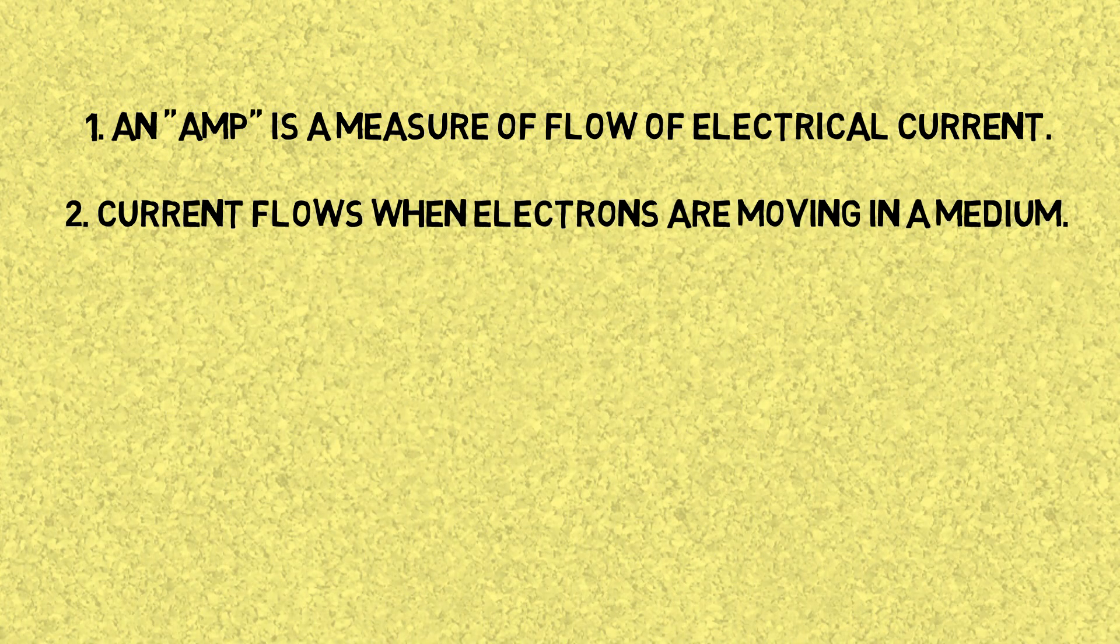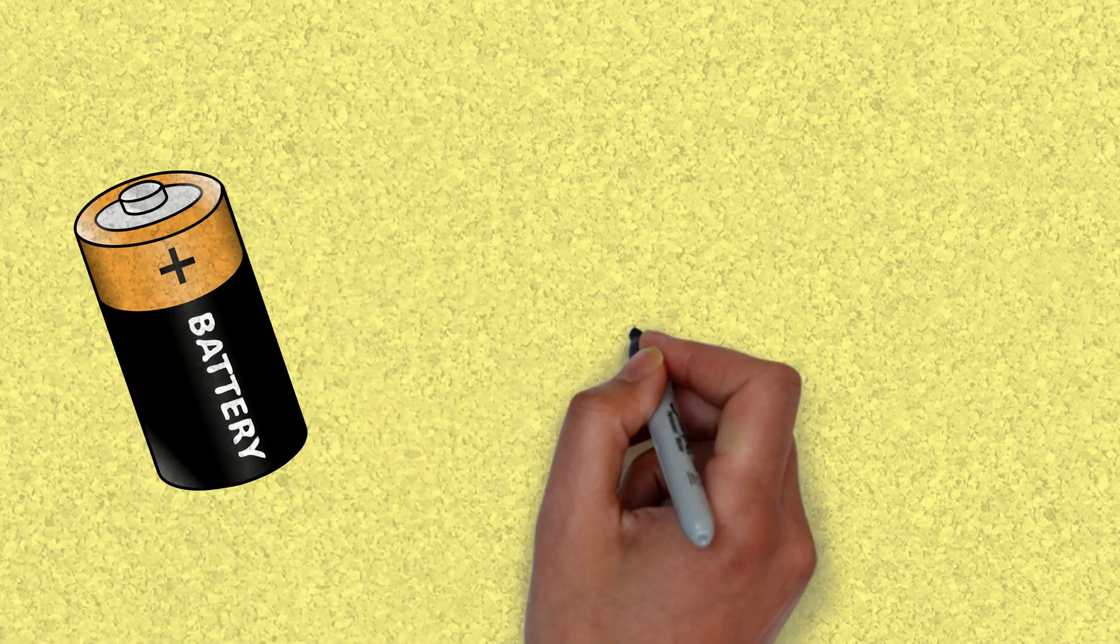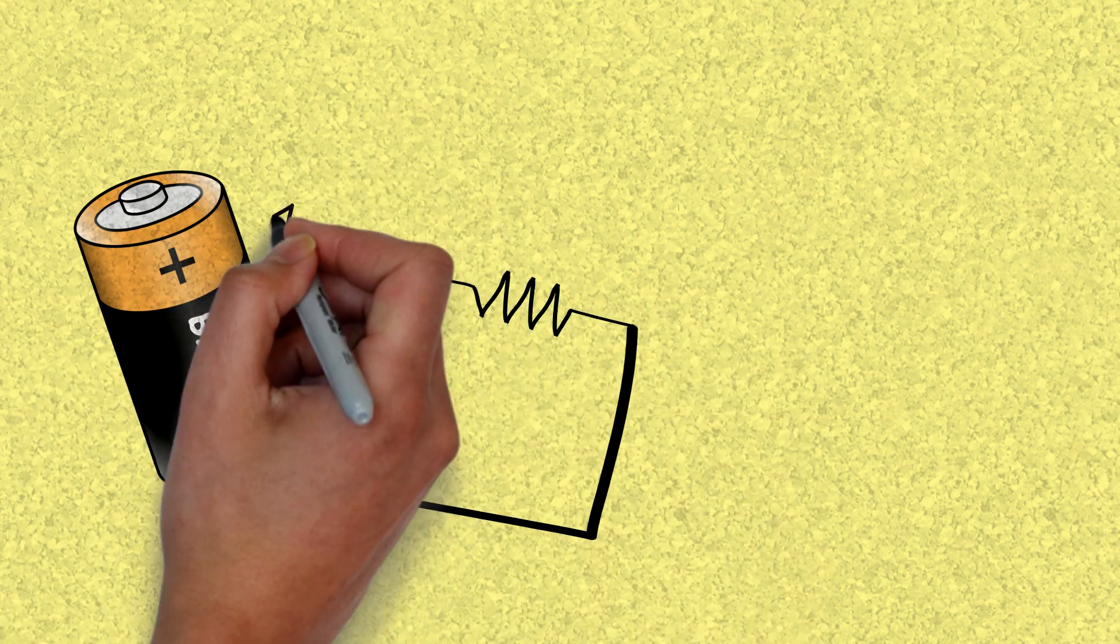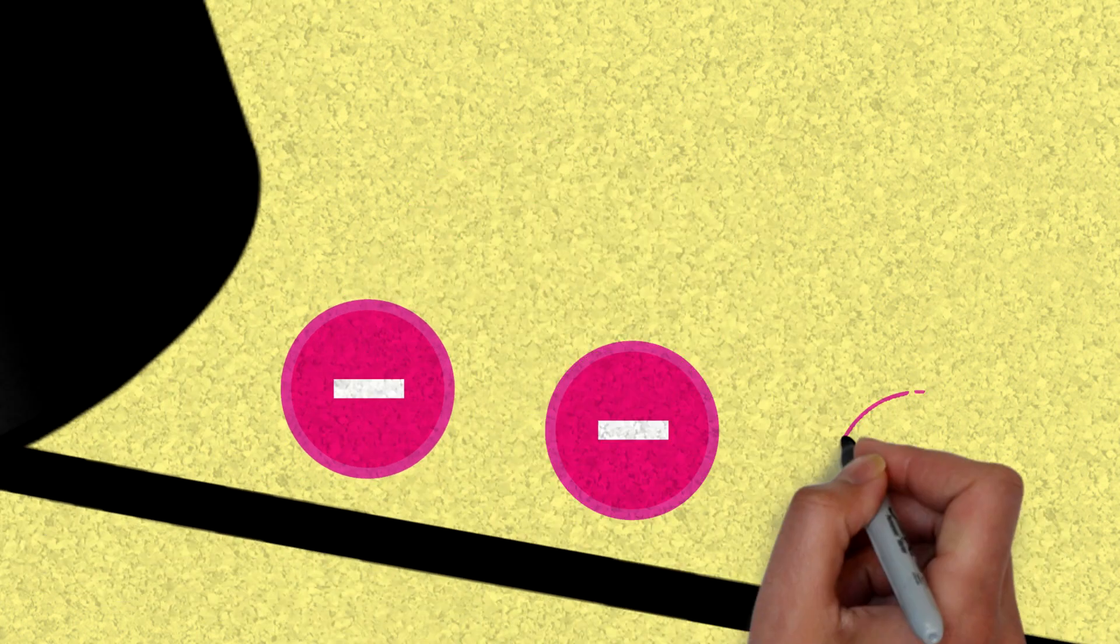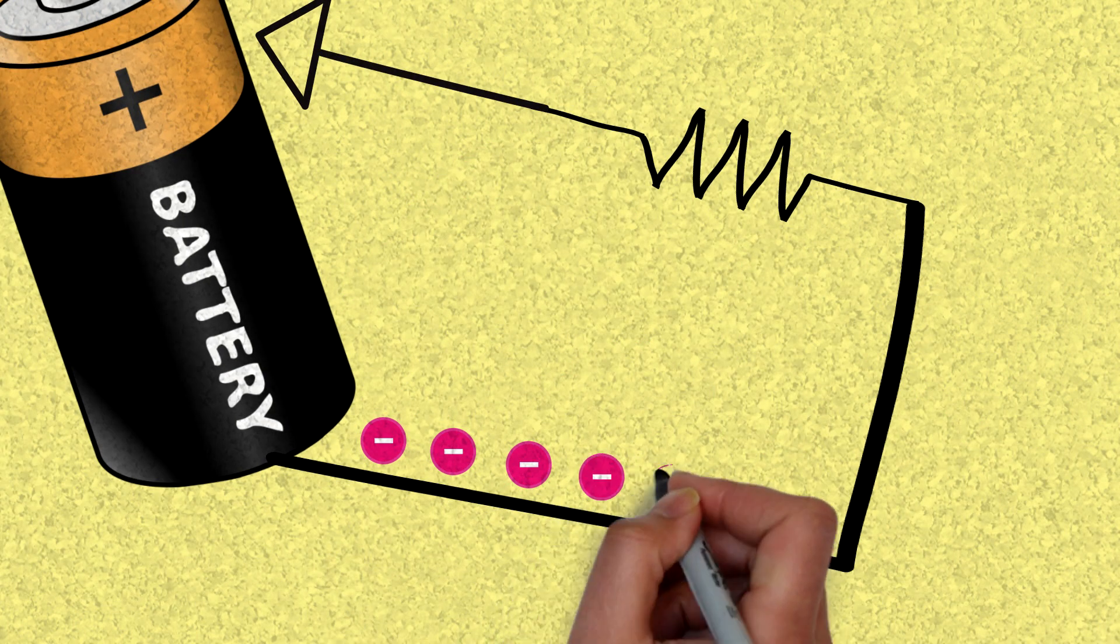Current flows because electrons move in a circuit through a wire or a medium. For example, if you have a circuit and you connect it to a battery here, electrons start to move from the negative end of the battery through the wire to the positive end.